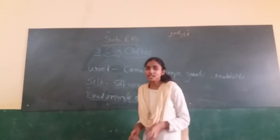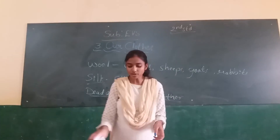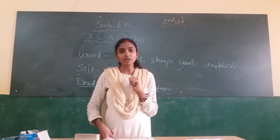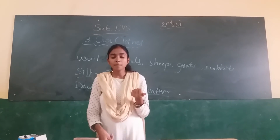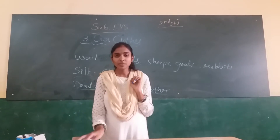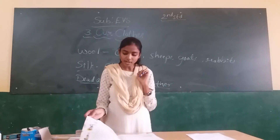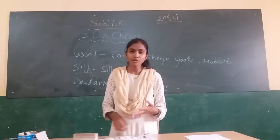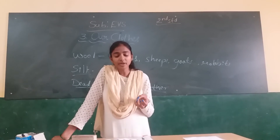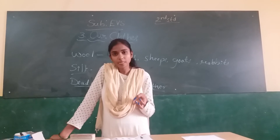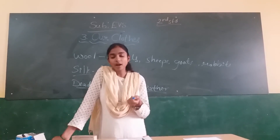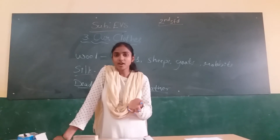Did you understand today's class? What did we study about? Where do we get the clothes from — from animals and plants. Cotton comes from plants. Wool comes from animals — goats, sheep, camels, rabbits. Silk comes from silkworms. And from dead animal skin, we make leather products.